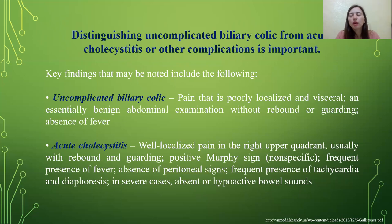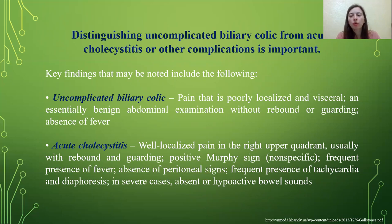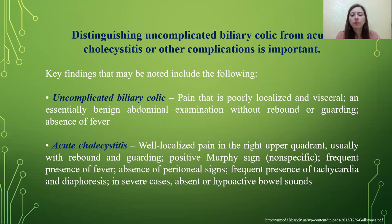Distinguishing uncomplicated biliary colic from acute cholecystitis is important. Key findings include the following. Uncomplicated biliary colic: pain that is poorly localized and visceral, essentially benign abdominal examination without rebound or guarding, and absence of fever. Acute cholecystitis: well-localized pain in the right upper quadrant, usually with rebound and guarding, positive Murphy's sign, frequent presence of fever, absence of peritoneal signs initially, and frequent presence of tachycardia and diaphoresis. In severe cases, absence of hyperactive bowel sounds.